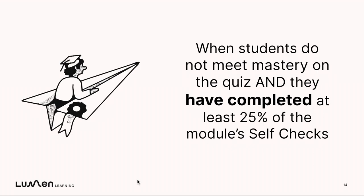It's important to know why a student might be recommended for an intervention. Time-sensitive interventions are focused on students who did not meet mastery on the quiz, but have completed at least 25% of the module self-checks. We call these students 'trying but struggling' — they're in the course content, they're practicing and using the materials, but they still haven't quite met mastery on the quiz. Our templates are designed to invite them to office hours or to share additional resources.